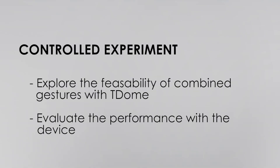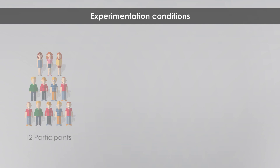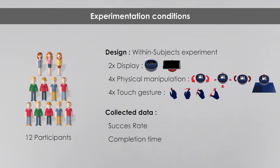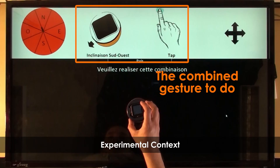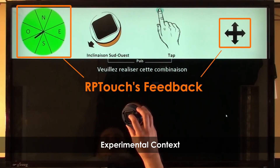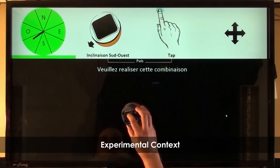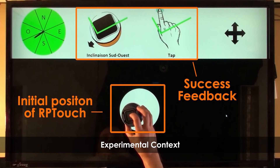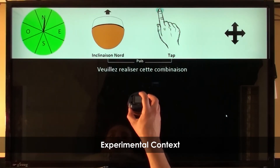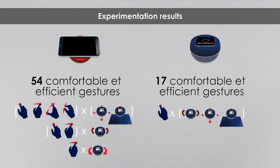We experimentally validated the feasibility of combined gestures with TDome and evaluated performance with the device by asking 12 participants to perform all possible combinations of physical manipulations and touch gestures on both versions. Results reveal that with the small version, 17 combined gestures can be comfortably and efficiently performed, while 54 combined gestures can be performed with the large version.